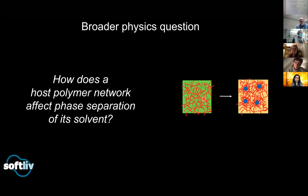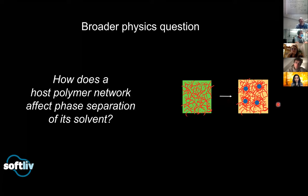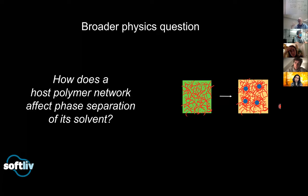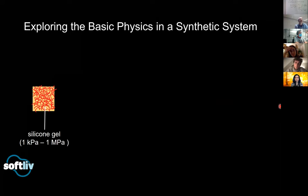Now we're going to generalize: this red network could be any polymer network and the green stuff is any solvent. Imagine the solvent has two components — a blue and a yellow — that normally make green when mixed. If I change the temperature or do something else to phase separate it, you can imagine that if those droplets excluded the polymer network as they grew, or had any interaction with it, you would introduce a new term in the free energy beyond just surface tension and condensation — some interesting long-range effects. That was our hypothesis and we decided to do some simple experiments.